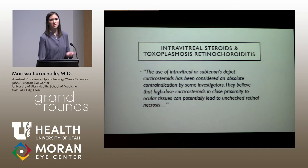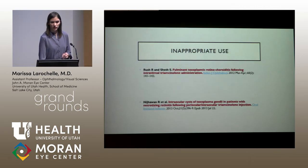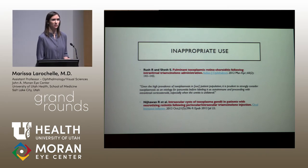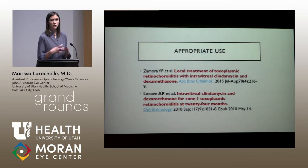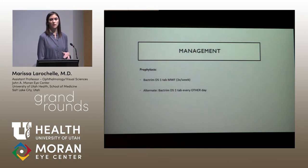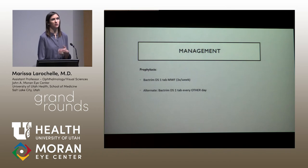There are many reported cases in the literature showing disastrous outcomes when intravitreal steroids are injected into an eye with toxo. The wise counsel is to consider toxoplasmosis for any pan-uveitis in an exposed patient population rather than assuming it's autoimmune. There are appropriate ways to use intravitreal steroids: reports of intravitreal dexamethasone — much shorter acting — concurrently with intravitreal clindamycin show good outcomes. For prophylaxis, Bactrim one tab three days a week (Monday, Wednesday, Friday) has been shown to reduce the risk of recurrence.